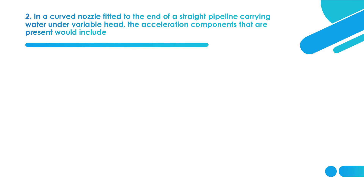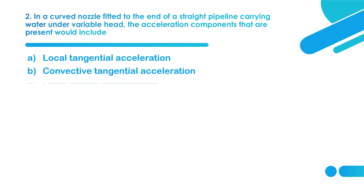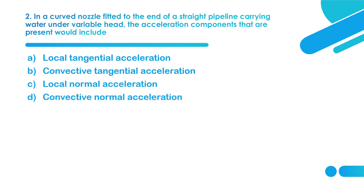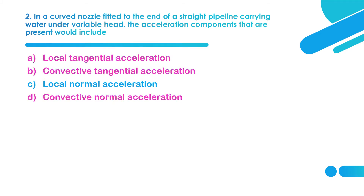The second question is regarding acceleration. In a curved nozzle fitted to the end of a straight pipeline carrying water under variable head, the acceleration components present would include: local tangential acceleration, convective tangential acceleration, and convective normal acceleration. Local normal acceleration is zero.